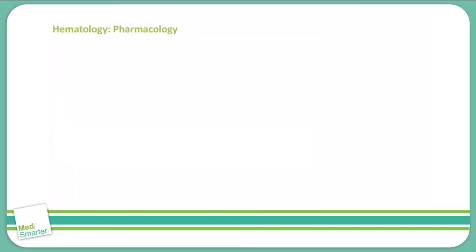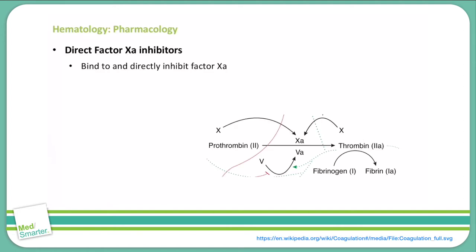Let's continue on and discuss Direct Factor XA inhibitors. Direct Factor XA inhibitors bind to and directly inhibit Factor XA. By inhibiting Factor XA, you are inhibiting the enzyme that converts prothrombin or Factor 2 to thrombin or Factor 2A.